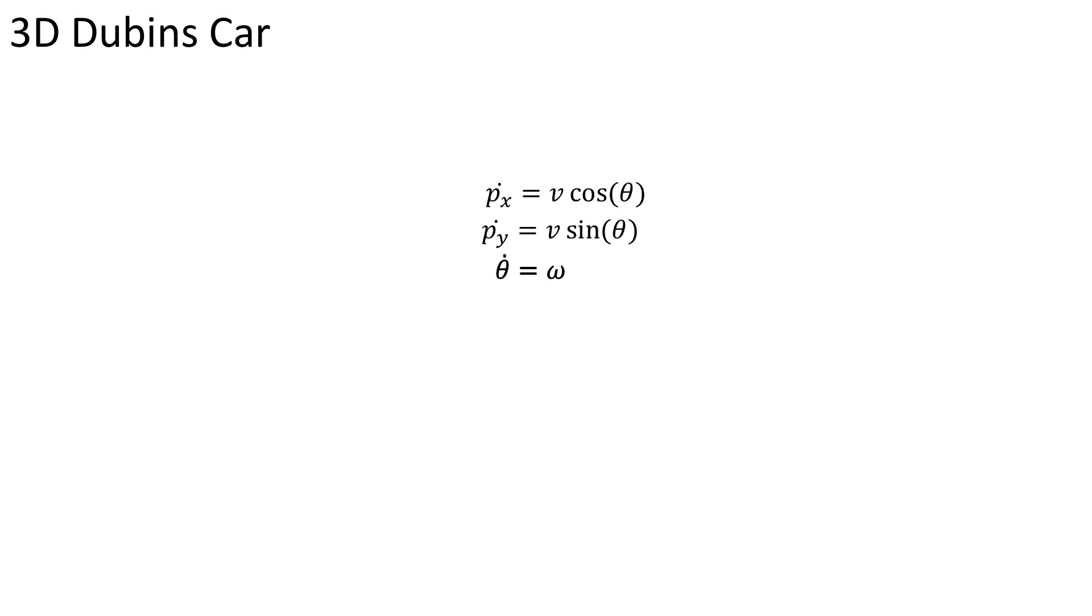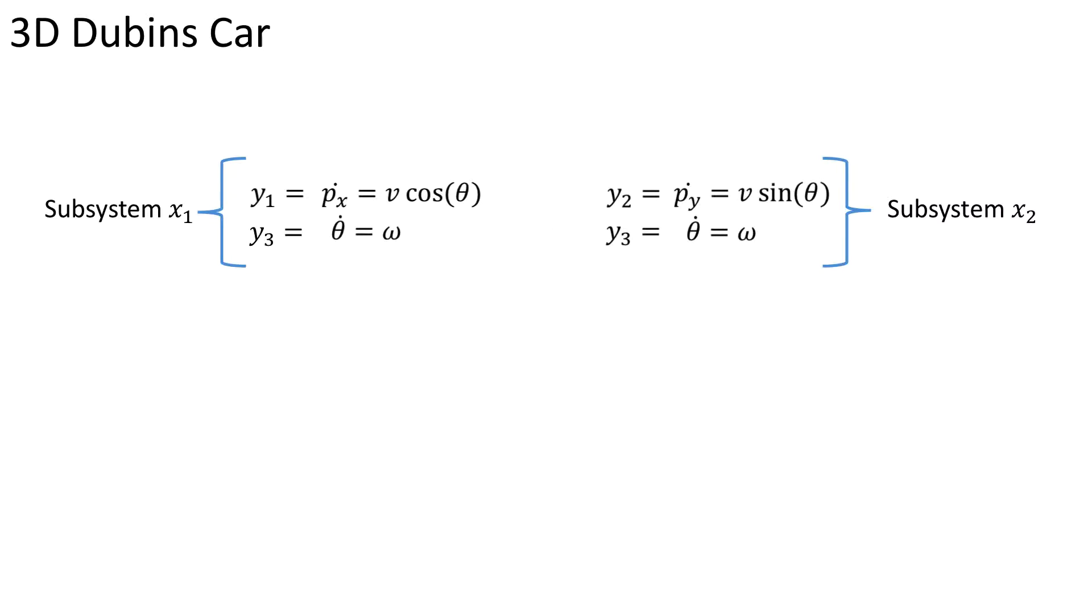Here we take a 3D Dubin's car model where the x and y positions depend on theta. By splitting the system into two self-contained subsystems as shown, we can compute the backward reachable set for each subsystem.